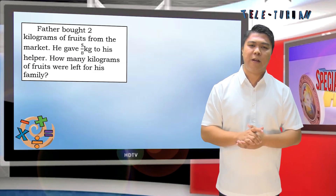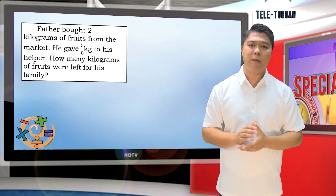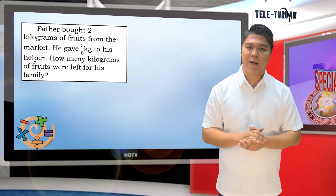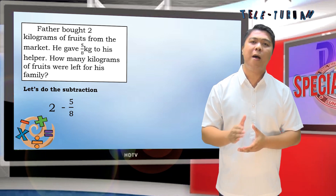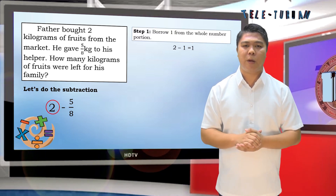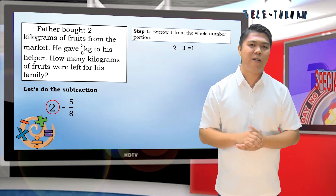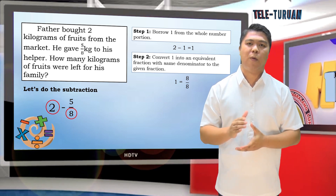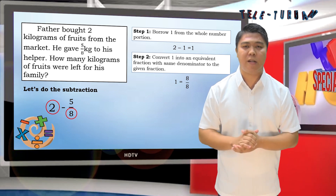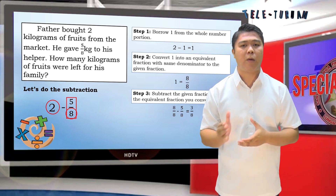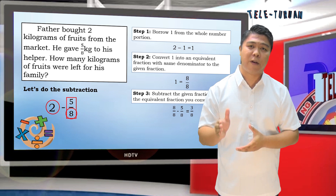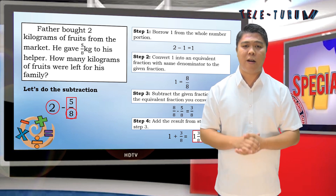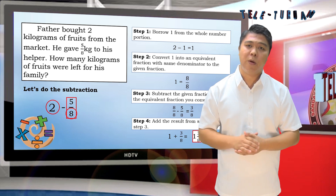Let's have another example. Father bought 2 kilograms of fruits from the market. He gave 5/8 kilograms to his helper. How many kilograms of fruits were left for his family? Let's do the subtraction: 2 minus 5/8. Step 1: borrow 1 from the whole number. 2 minus 1 is 1. Step 2: convert 1 into an equivalent fraction with the same denominator. 1 is equal to 8/8. Step 3: subtract — 8/8 minus 5/8 is 3/8. Step 4: add the results. 1 plus 3/8 is equal to 1 and 3/8.